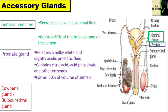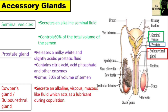Now let's talk about Cowper's gland, also called the bulbourethral gland. It is a small, pea-sized and paired gland situated on either side of the urethra. These glands secrete an alkaline, viscous mucus-like fluid which acts as a lubricant during copulation.